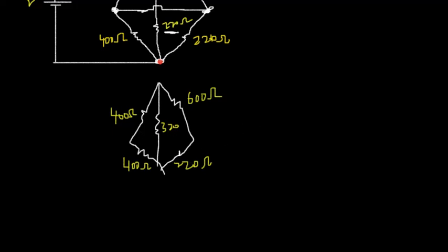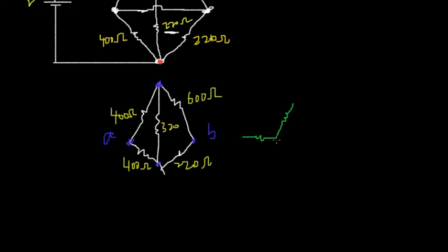From here you have to transform this: this is one delta configuration — let's call it delta A — and this is another delta configuration — delta B. So we have to convert both of these into star. Let's say this is A and this is B; we are transforming both A and B to star. This is how it will be transferred.